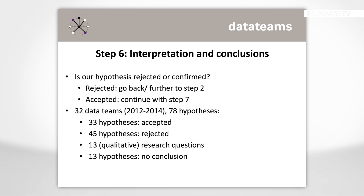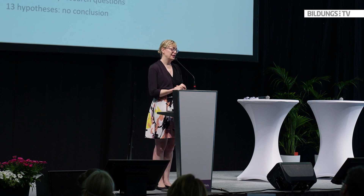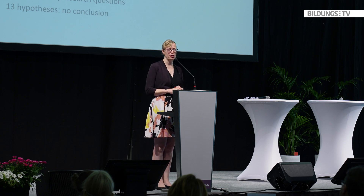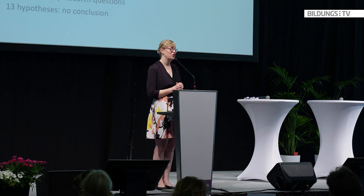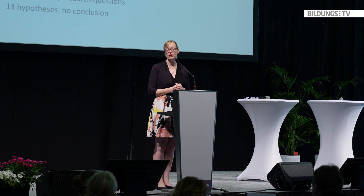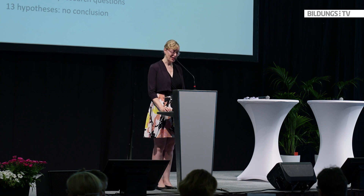Then we go on to interpretation and conclusion — meaning: is the possible cause we designed in step two, our hypothesis, rejected or accepted? It's a little bit like a game: if it's rejected, you have to go back to step two; if it's accepted, you continue with step seven. Looking at data from previous data teams, we saw that we had to reject 45 hypotheses. In more than 90% of cases, data teams have to reject the first hypothesis — there are a lot of assumptions in schools that are unfortunately incorrect. A nickname our data teams have in the Netherlands is 'myth busters.'